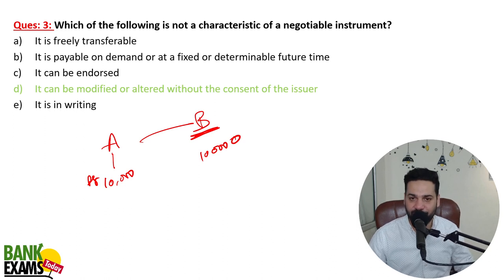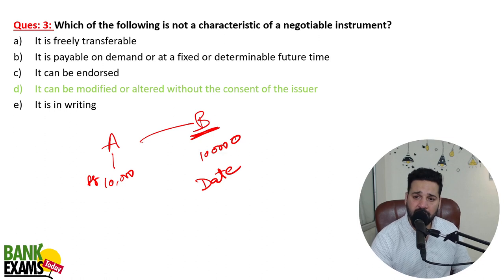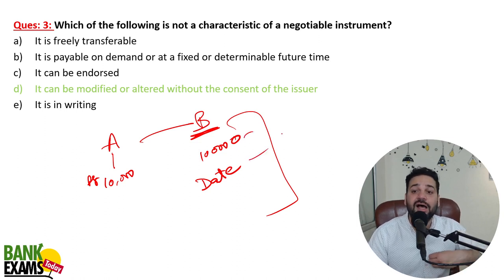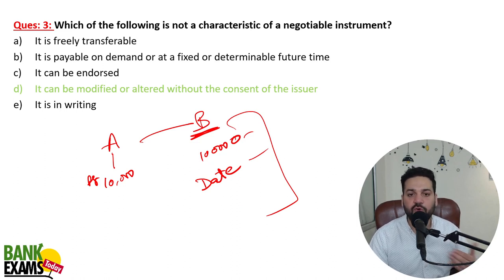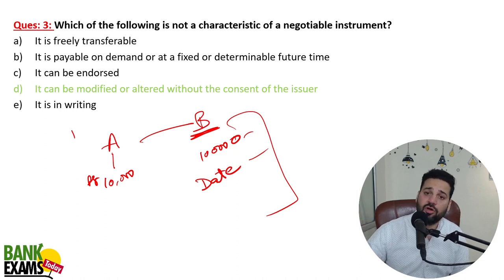B then added a zero behind the ten thousand, making it one lakh rupees. That is a modification or alteration without the consent of A. Even if B changes just the date, any changes made without the consent of the issuer are not allowed. The instrument will not be valid once a modification has been made. In case of modification, the issuer has to countersign it — that signature represents authorization.